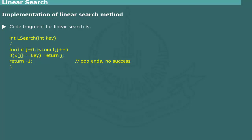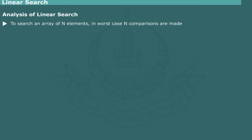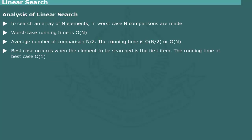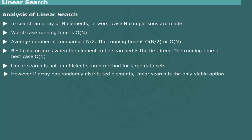Analysis of Linear Search: To search an array of size n, almost n comparisons are made in the worst case (when the element is non-existent or is the last element). Thus, in the worst case, the running time of linear search is O(n). The average number of comparisons would be n/2. In the best case, the element being searched for is the very first item, giving efficiency O(1). Linear search is not an efficient search method, but if the array consists of randomly distributed elements, choice is restricted to linear search.